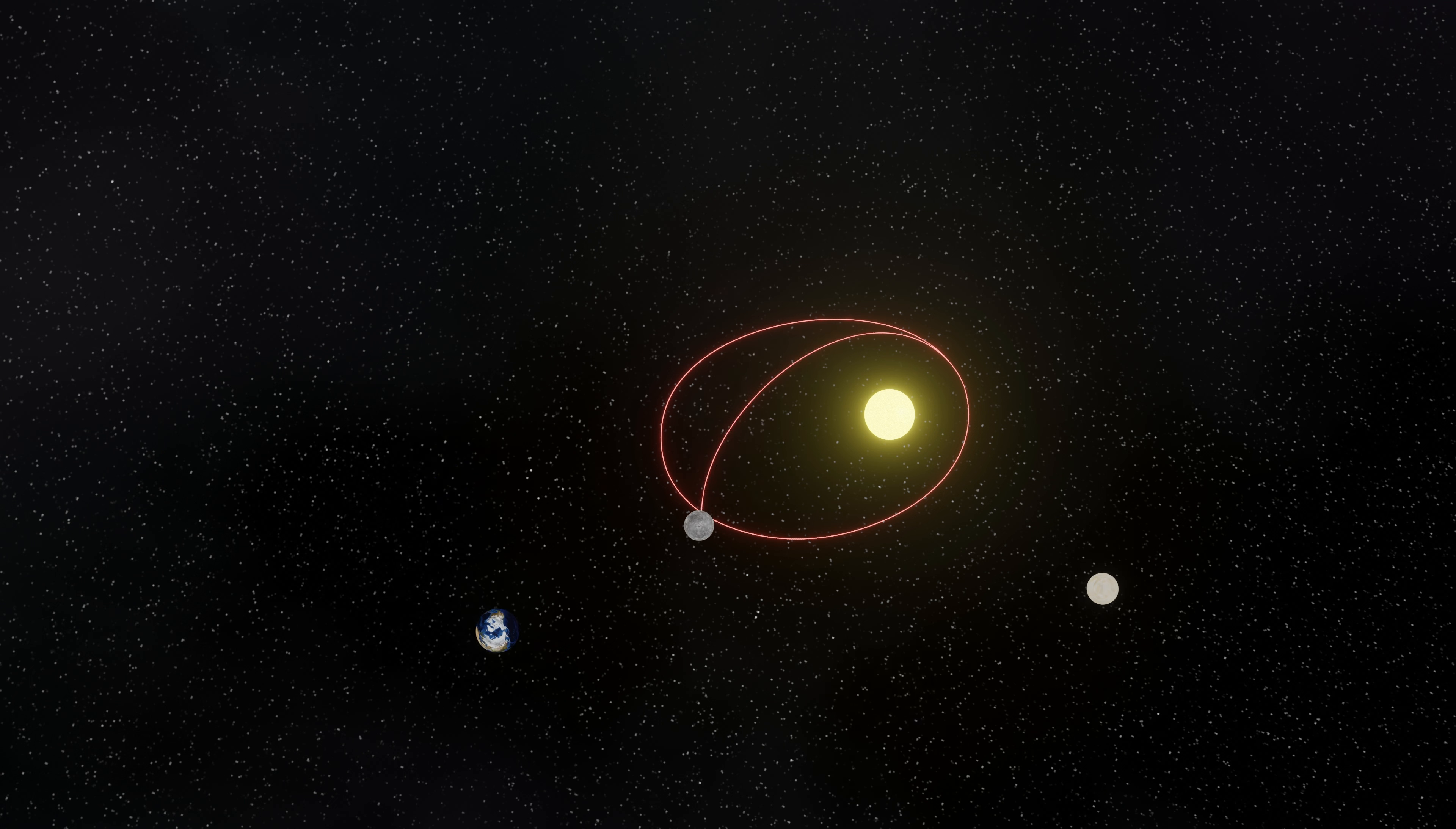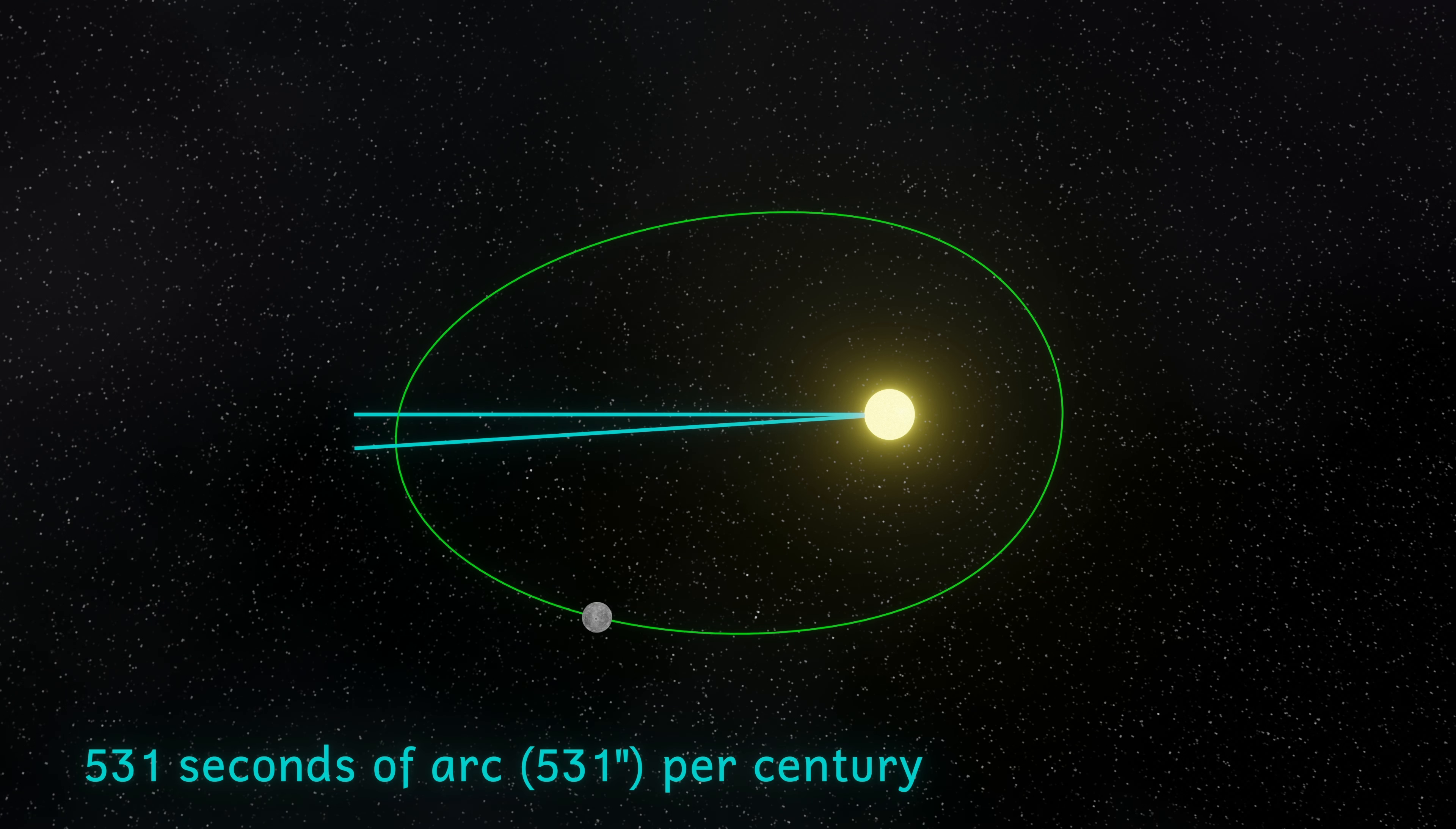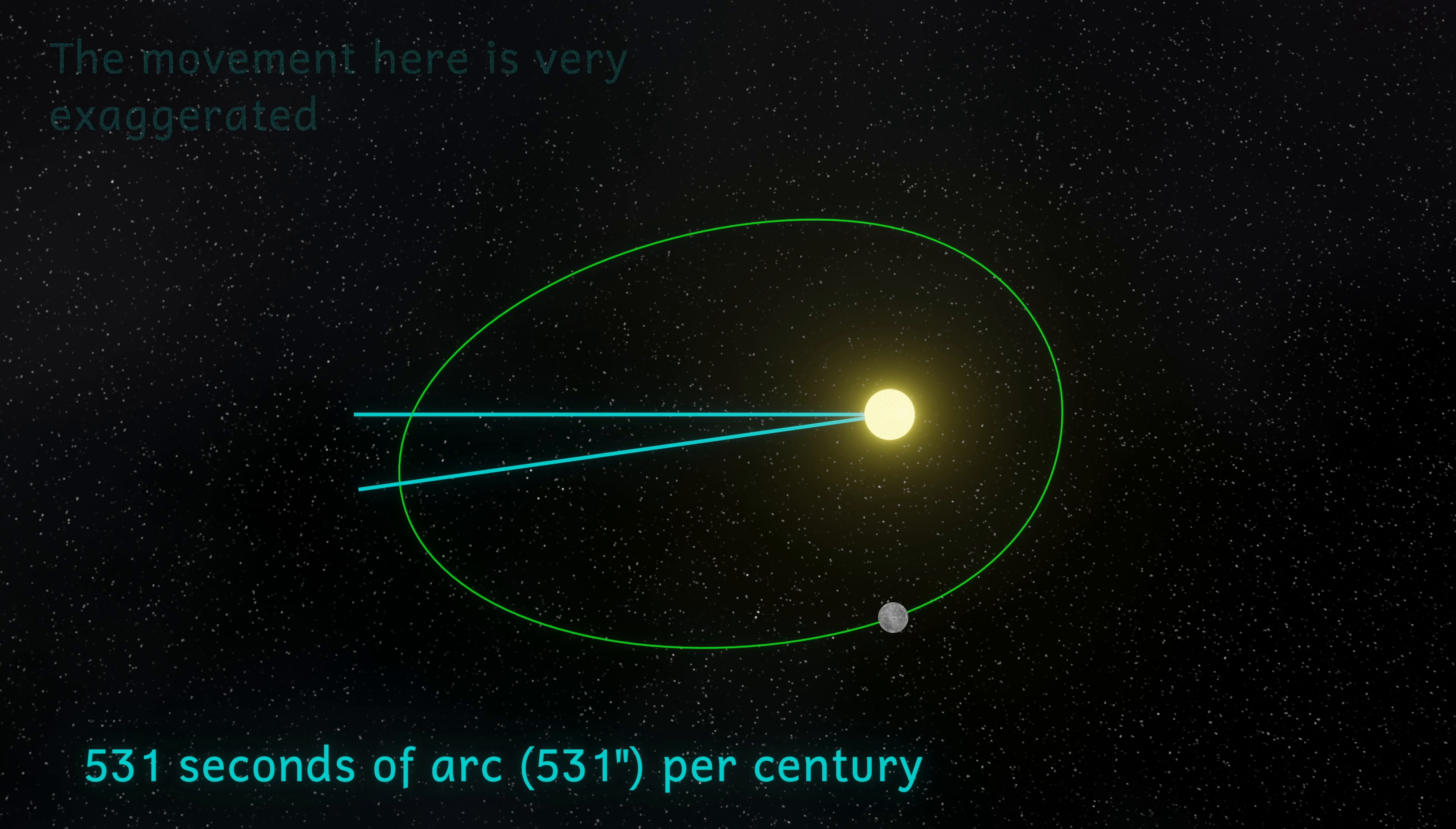And here's where we get to our problem. The precession of Mercury isn't what it's expected to be. Using calculations based on the mathematics of Newton, it was calculated that the orbit of Mercury should precess by 531 seconds of arc per century. One second of arc is one three thousand six hundredth of a degree. So 531 seconds of arc is about a sixth of a degree per century.